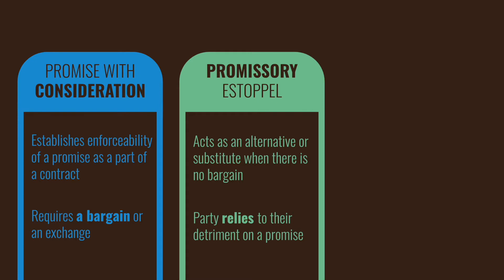The promisee does not necessarily get the full benefit of that promise or the full value. Rather, they get what's called reliance damages, which is the amount of money they expended in reliance on that promise, rather than putting them monetarily where they expected to be if the promisor had fully followed through and performed what was promised.